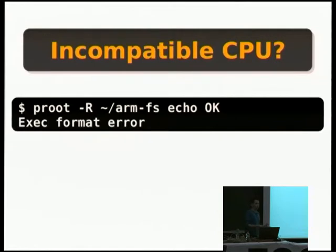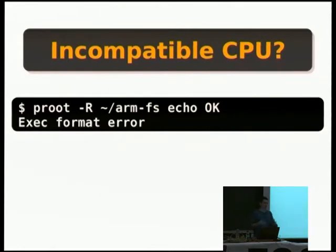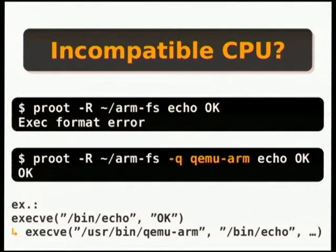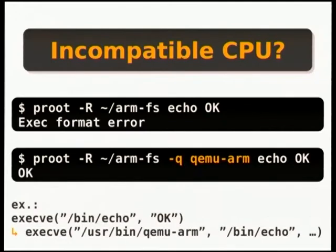If you try to PRoot into a root filesystem not built for your architecture — say you try to PRoot into an ARM root filesystem for Raspberry Pi with Debian — but your host computer is x86, you will get an error message. This is not specific to PRoot; you get the same with chroot. However, PRoot has a nice feature: you can specify a CPU emulator. In this case, a QEMU user-mode emulator for ARM. Each time you try to execute an ARM binary via the execve syscall, PRoot will detect that the binary is not for your host architecture, prepend the QEMU user-mode command, and QEMU will translate ARM instructions into x86 instructions on the fly.